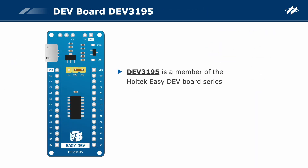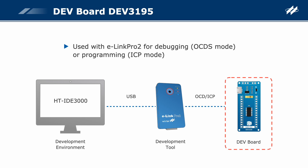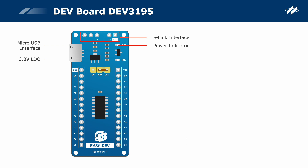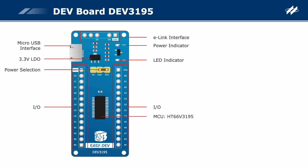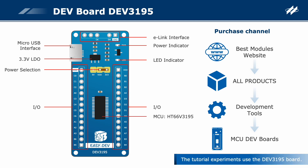The DEV3195 board is a member of the Holtec Easy Development board series. The emulation MCU's part number is HT66V3195. All MCU pins are externally bounded, which is convenient for users to use. It can be used with the E-Link Pro 2 for debugging or MCU programming. This development board includes an E-Link interface, a Micro-USB interface, a power indicator, a 3.3V LDO, an LED indicator, power selection, I/O pins, and the MCU HT66V3195. The development board can be purchased from the official website of Best Modules.